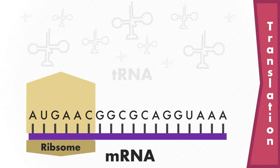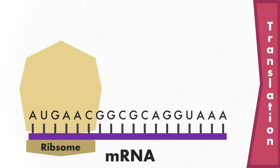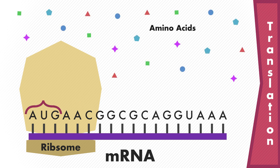With the mRNA in the cytoplasm, it binds with a ribosome so that it can be decoded. The mRNA's protein message is read three nucleotide bases — triplet codes, or codons — at a time. Each triplet represents a specific amino acid.